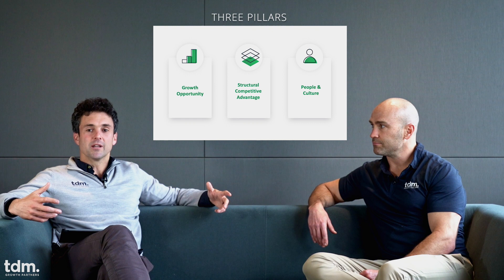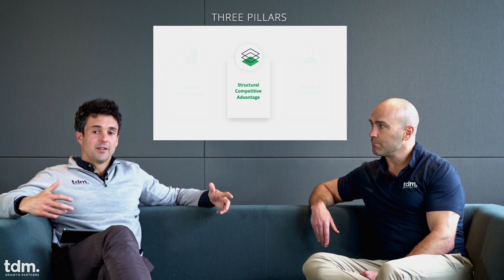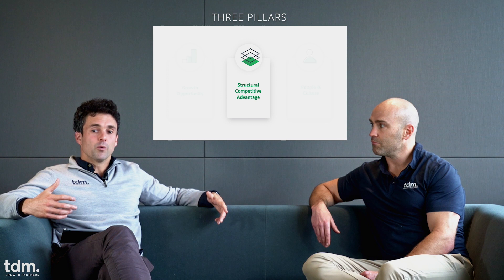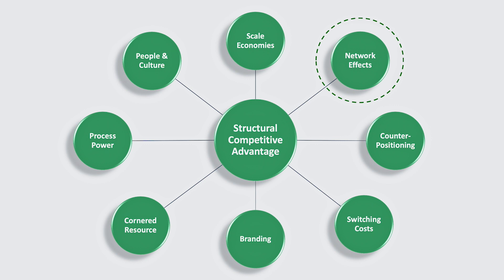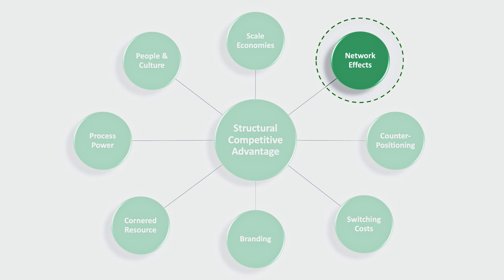We thought today we'd dig into one of those three. The reason we've found it really powerful when talking about that framework is that having a shared language with all our portfolio companies has created great depth and quality in conversation. So we'd do that on one specific topic: network effects. The most powerful of Hamilton Helmer's seven powers — to which we add an eighth, people and culture — is network effects, and that's what we want to dig into today.